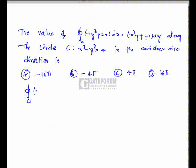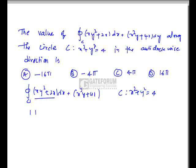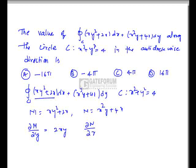You have to find the value of the integral over the curve x² + y² = 4. Now, let us take this expression as M, that is xy² + 2x, and the next expression as N, that is x²y + 4x. Now, ∂M/∂y is nothing but 2xy, ∂N/∂x is nothing but 2xy + 4. Now, ∂N/∂x - ∂M/∂y is nothing but 4.